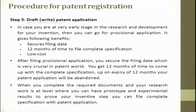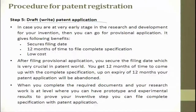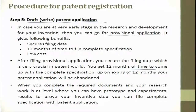Then we start writing the draft. Writing the draft of a patent is really an art, and we have professionals available for it. You give your idea, the professionals take it and start working on it and try to give a solution. If you are at a very early stage in research and development, you can go for a provisional application, which gives the following benefits: a secured filing date, 12 months of time to file the complete specification, and it is low cost. After filing the provisional application, you secure the filing date, which is very crucial in the patenting world. You get 12 months — one year — to come up with a complete specification. Upon expiry of these 12 months, your patent application will be abandoned.